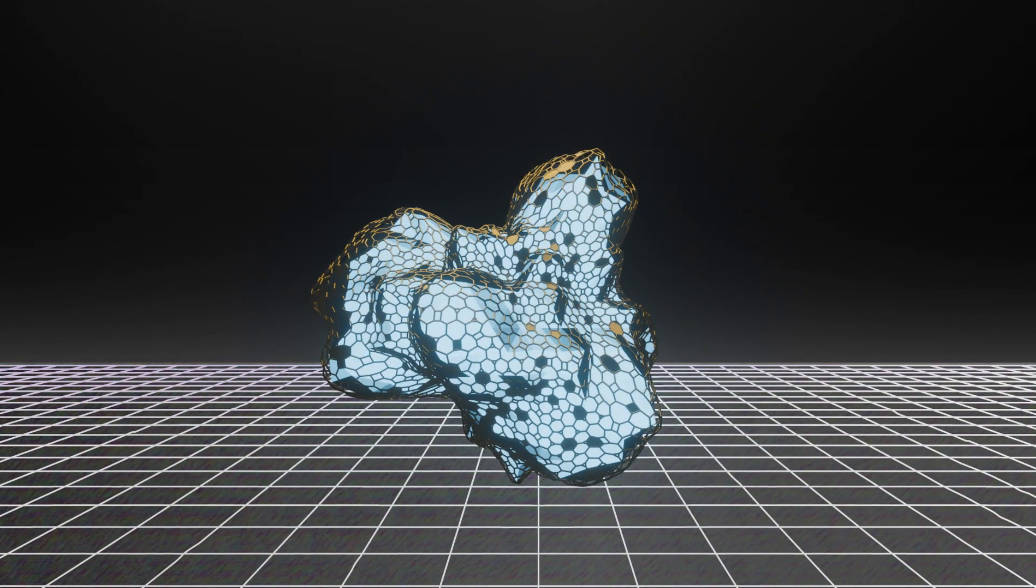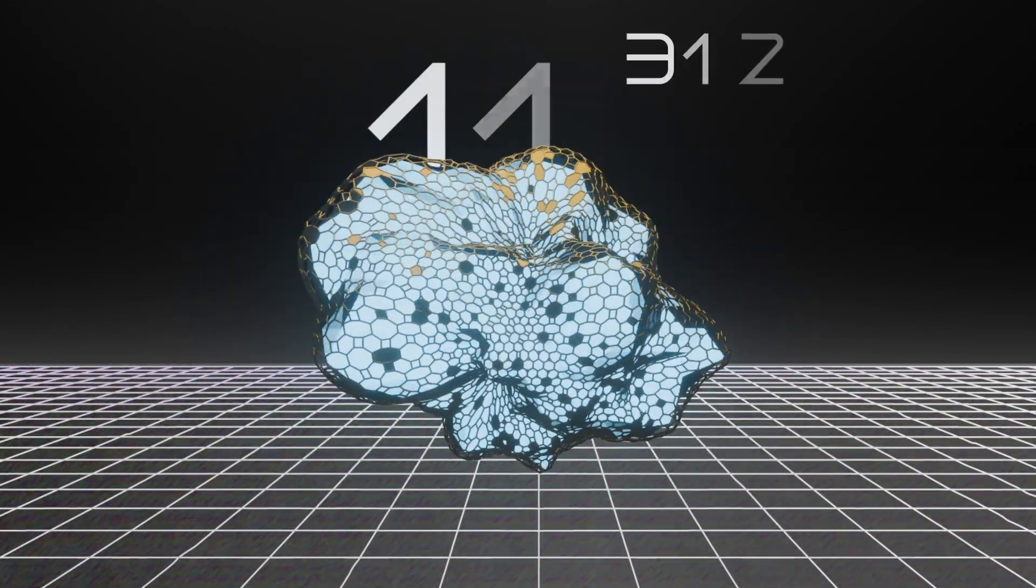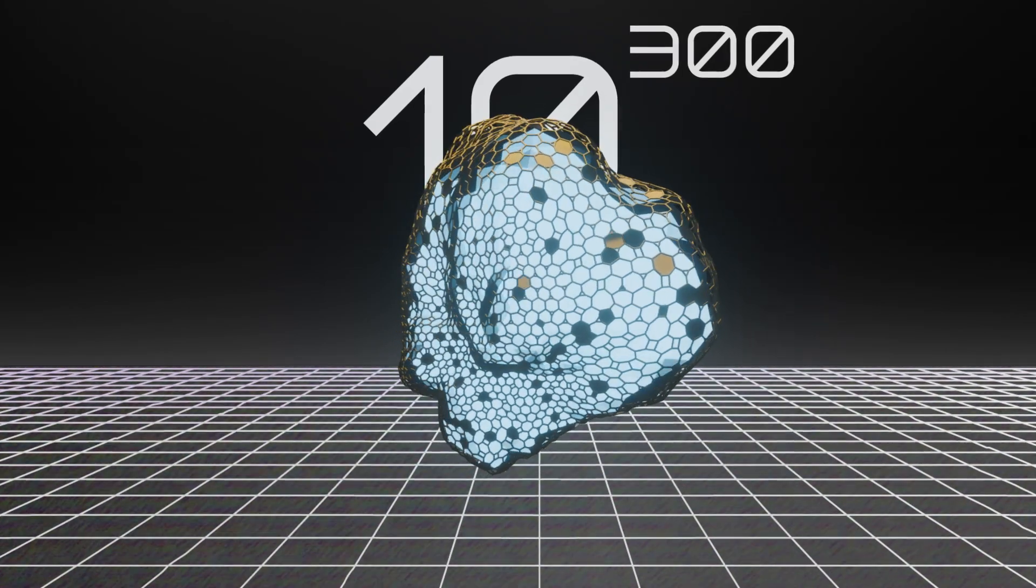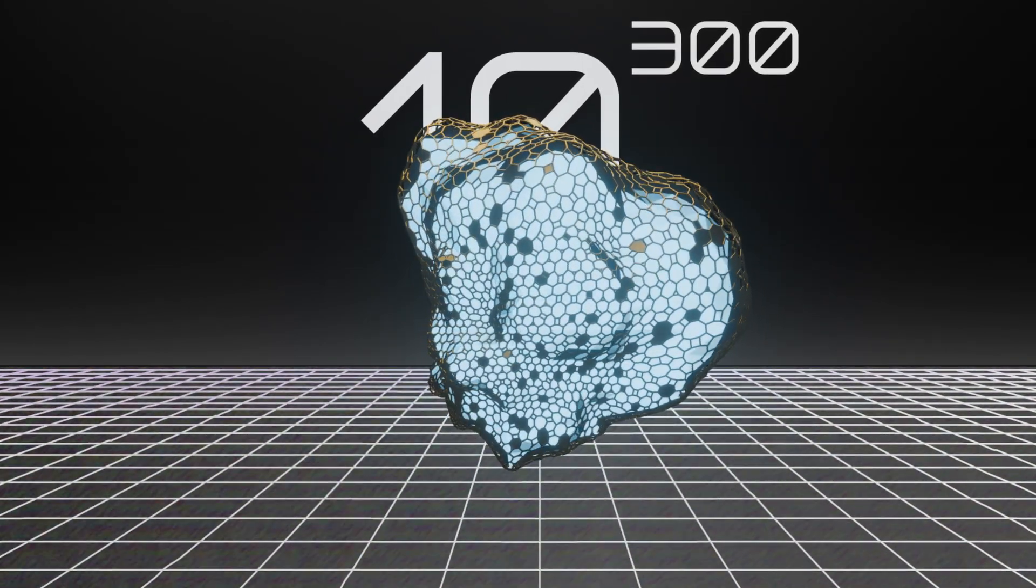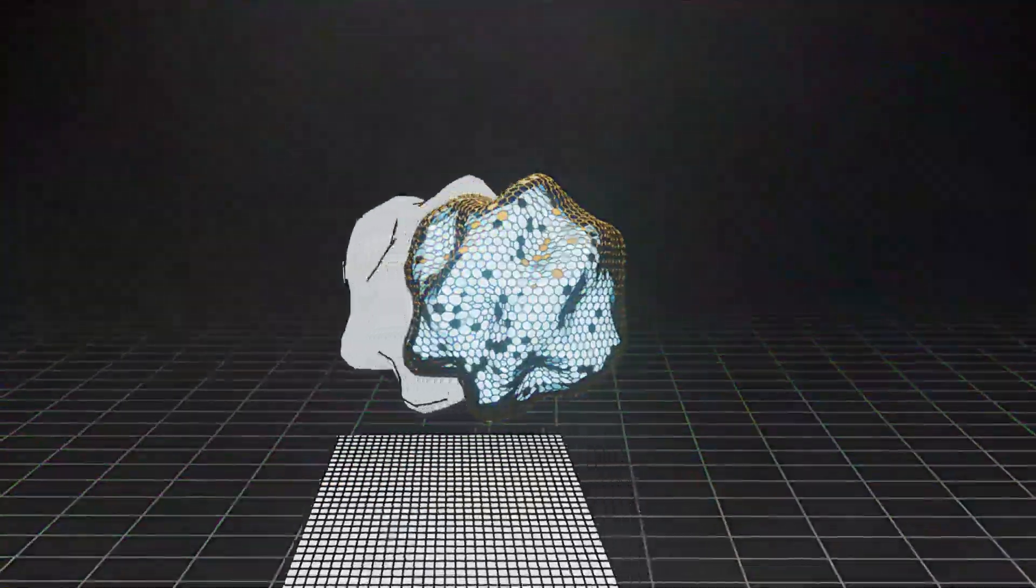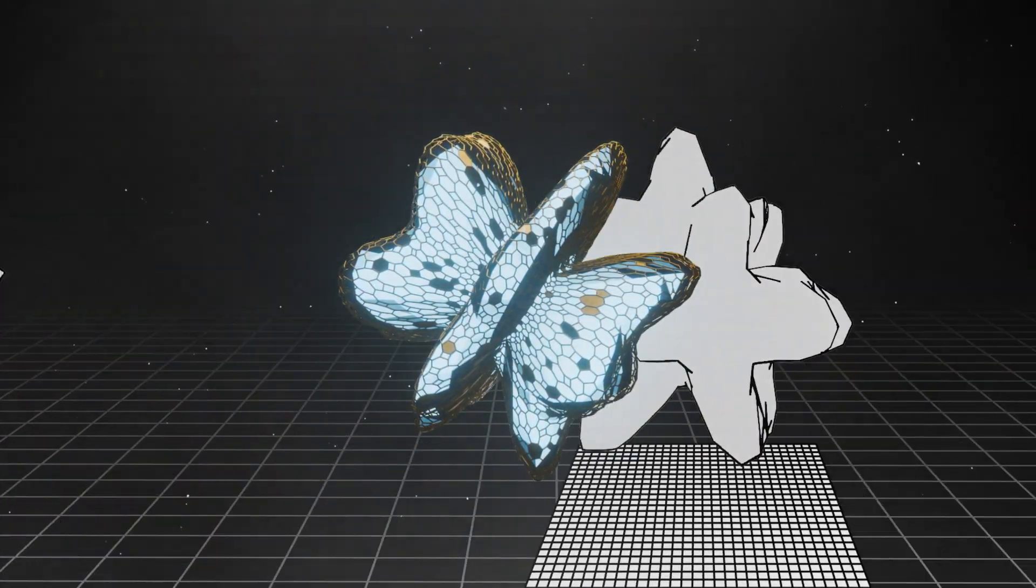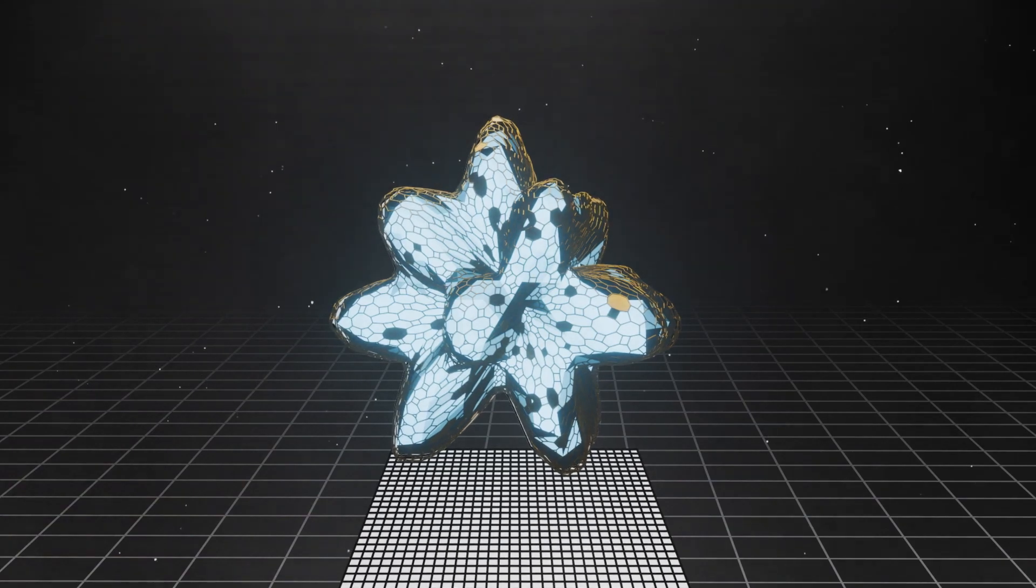That's because any given protein can theoretically adopt somewhere around 10 to the 300th different configurations. As we just demonstrated, that's an insane amount of structures. Yet somehow each protein spontaneously folds into one specific shape and carries out its task accordingly. Out of all those combinations, it knows what shape to pick. How crazy is that?